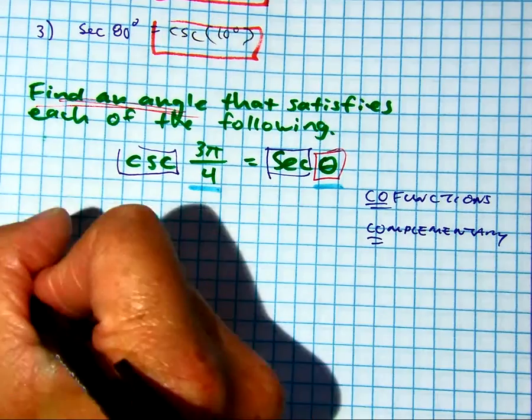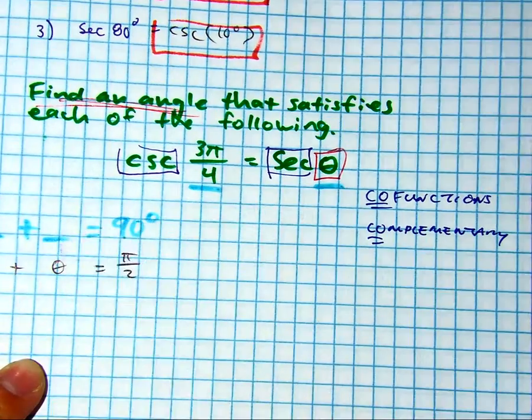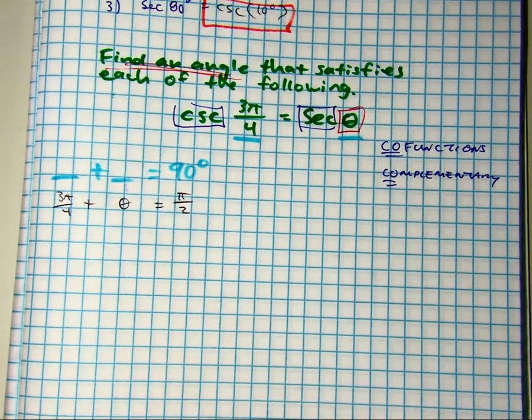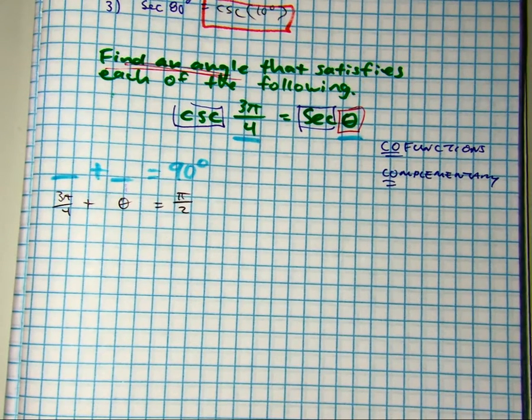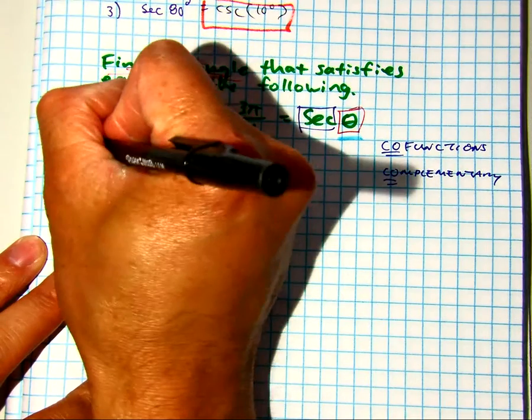So I have 3 pi over 4 plus theta. Here's one way of doing it, using my blanks.